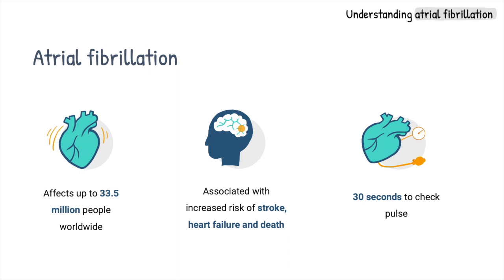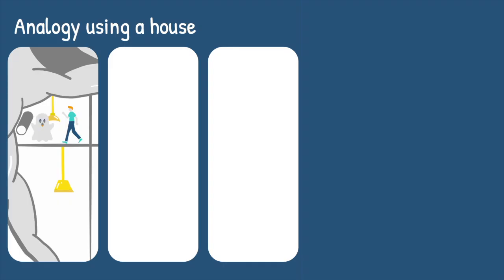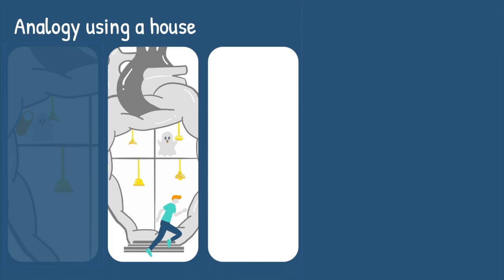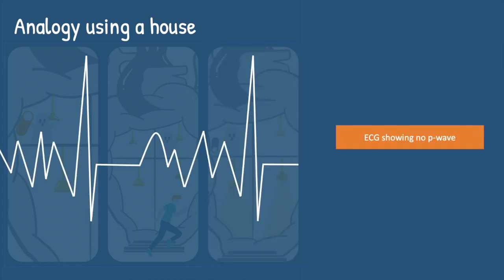Relating back to my last video describing the conduction system of the heart using the analogy of Alfred's house, AF occurs when the top floor of Alfred's house becomes haunted. These ghosts like to play around with the light switches, making the lights flicker instead of switching on and off normally. As Alfred is afraid of ghosts, he runs away, leaving no one to control the light switch. Because the lights on the top floor are no longer regularly turning on and off, we lose the P wave on the ECG, which is replaced by fibrillation waves. The irregular light makes it difficult for the light sensor switch to control the ground floor lights regularly, resulting in an irregular rhythm, which reflects the irregular nature of the pulse felt during AF in real life.